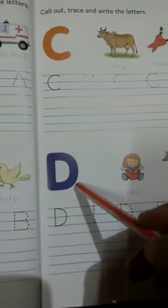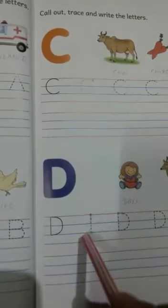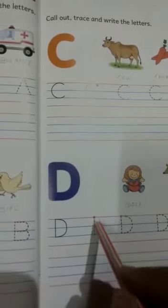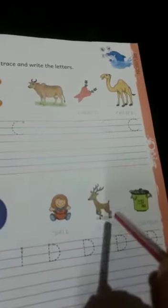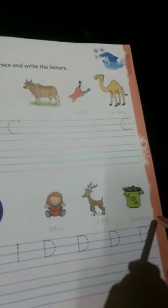And this is capital D. Now this is the starting point. Towards the arrow, we can join and then write D. D for doll, D for deer, D for dustbin.